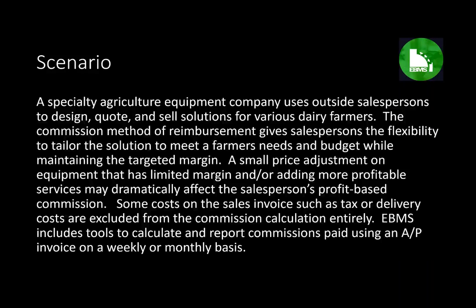A specialty agriculture equipment company uses outside salespersons to design, quote, and sell solutions for various dairy farmers. The commission method of reimbursement gives salespersons the flexibility to tailor the solution to meet a farmer's needs and budget while maintaining the targeted margin. A small price adjustment on equipment with limited margin, or adding more profitable services, may dramatically affect the salesperson's profit-based commission. Some costs on the sales invoices such as tax or delivery costs are excluded from the commission calculation entirely. EBMS includes tools to calculate and report commissions paid using an accounts payable invoice on a weekly or monthly basis.